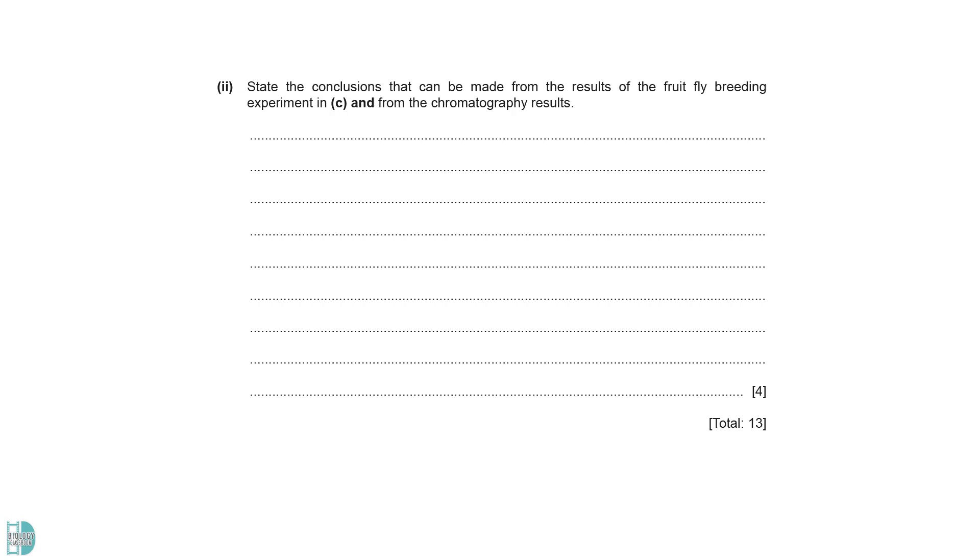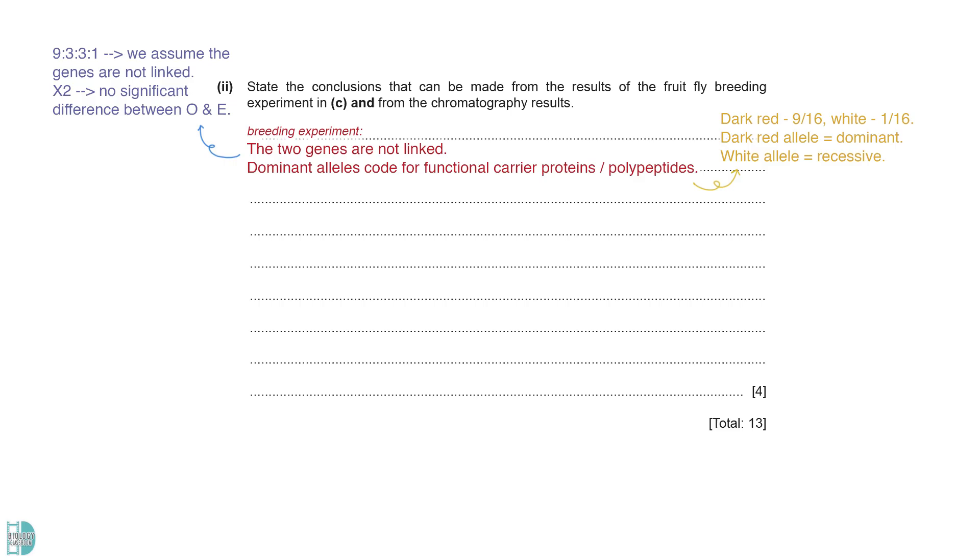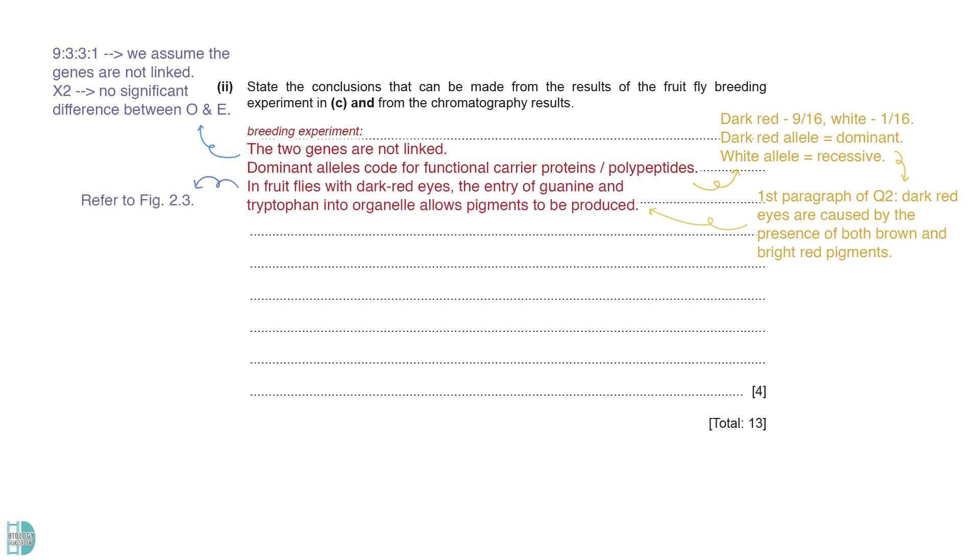Part 2: State the conclusions that can be made from the results of the fruit fly breeding experiment in C and the chromatography results. The expected ratio 9:3:3:1 indicates that we assume the genes are not linked when we carry out the genetic cross. Since the chi-square test revealed no significant difference between the observed and the expected values, we can now conclude that the genes are not linked as predicted. The probability of dark red is 9 over 16 and white is 1 over 16. This indicates that the dominant allele calls for dark red while white is recessive. The first paragraph of question 2 mentions that dark red eyes are caused by the presence of both brown and bright red pigments. From figure 2.3, we now know that the dominant alleles code for the functional carrier proteins resulting in the entry of both guanine and tryptophan. This leads to the production of both pigments resulting in dark red eyes. With that said, any flies with at least one dominant B and one dominant R allele have dark red eyes. White eyes can only be homozygous recessive.